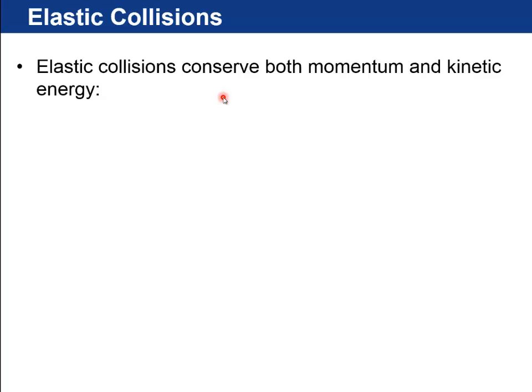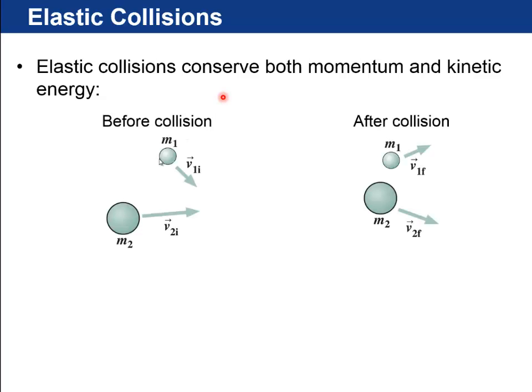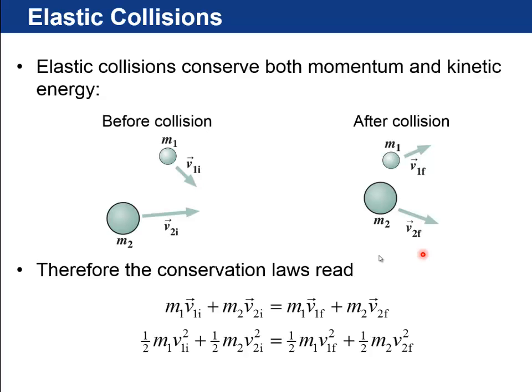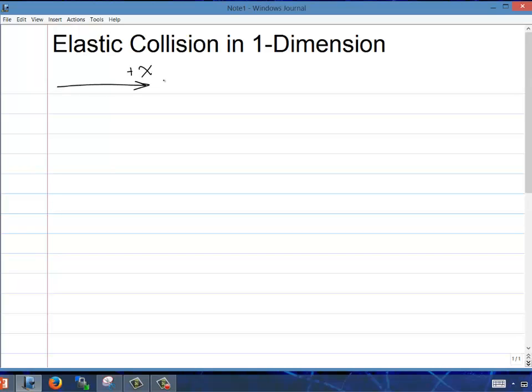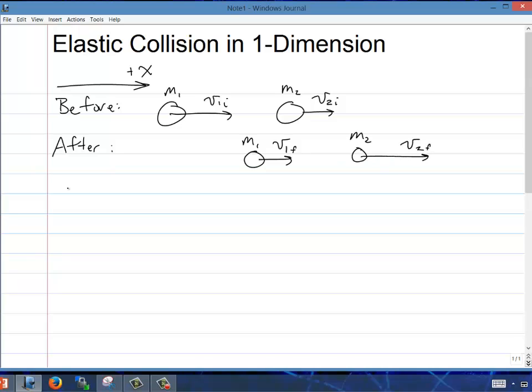So elastic collisions, this is the last section, 9.6, conserve both momentum and kinetic energy. You've got m1 v1 initial, m2 v2 initial. After the collision, you've got m1 v1 final and m2 v2 final. The conservation laws are conservation of momentum and conservation of kinetic energy. You simultaneously solve these two equations. I want to start by assuming everything's happening along the x-axis. So we'll do one-dimensional elastic collisions. We define the x-axis towards the right. We'll draw the situation before, as mass 1 is moving right with v1i, and mass 2 is moving right with v2i.